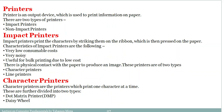Coming to another category of output devices: printers. When we need any kind of printed output from a computer, we use printers. There are lots of varieties of printers. The main two categories are impact printers and non-impact printers. Impact printers print characters by striking them on a ribbon which is then pressed on the paper. Characteristics of impact printers: they are very low cost but very noisy.